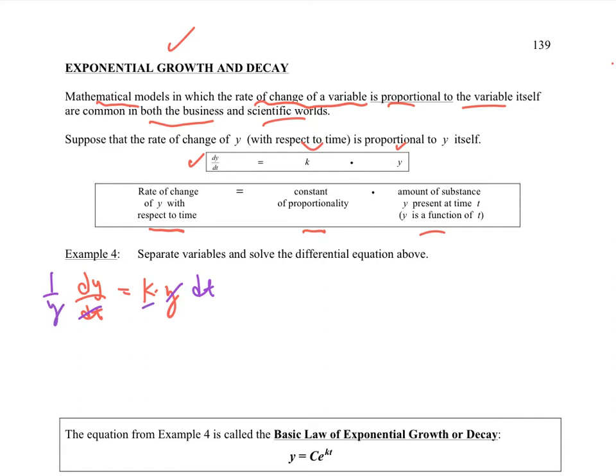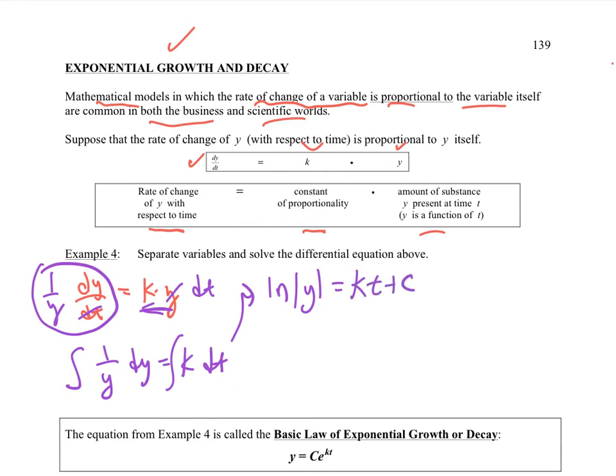Now, where should I put this k? I'm going to give you a hint. Keep this side as clean as possible. Try to keep constants and everything else over here on this side if you can. So now I'm going to have the antiderivative 1/y dy is equal to k dt, the antiderivative of that. So this would be ln y is equal to kt + c.